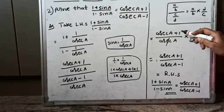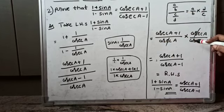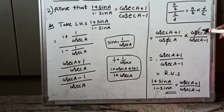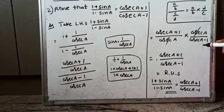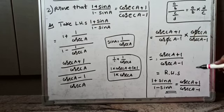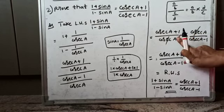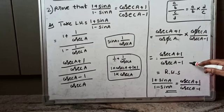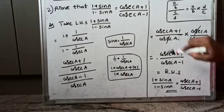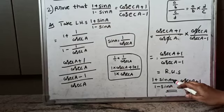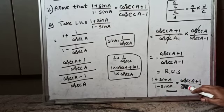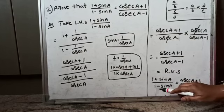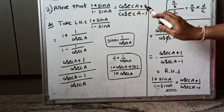After cancellation, the remaining expression is (cosec A + 1) / (cosec A - 1). We have proved the RHS. So (1 + sin A) / (1 - sin A) = (cosec A + 1) / (cosec A - 1). LHS equals RHS. Proved. Thank you.